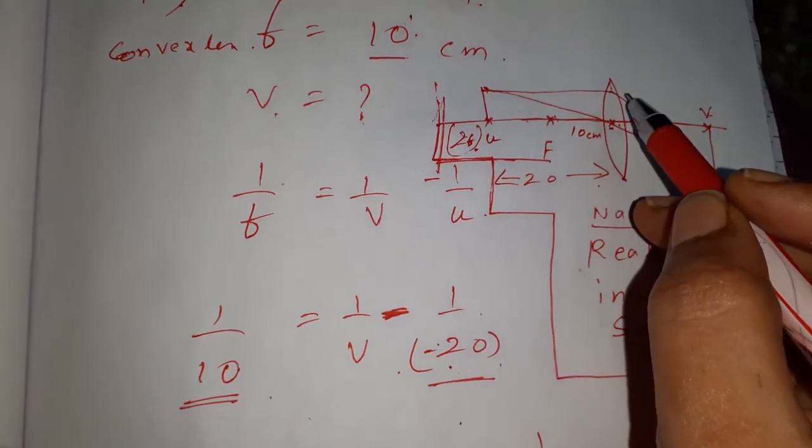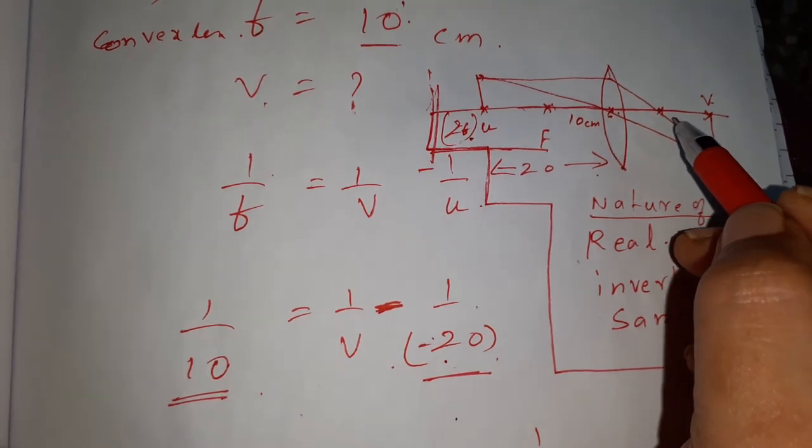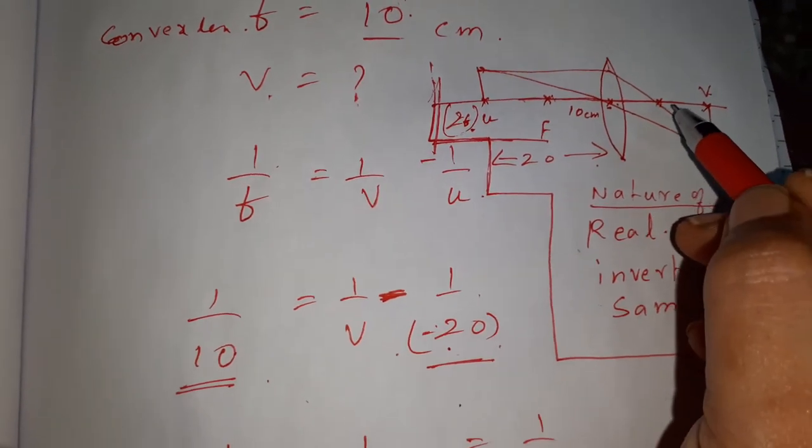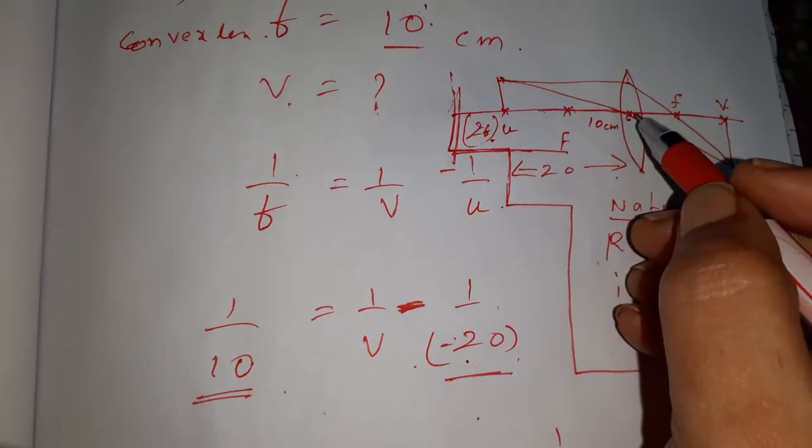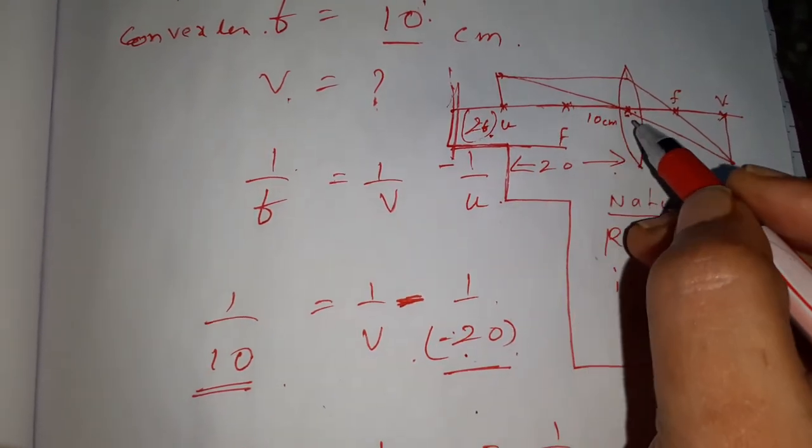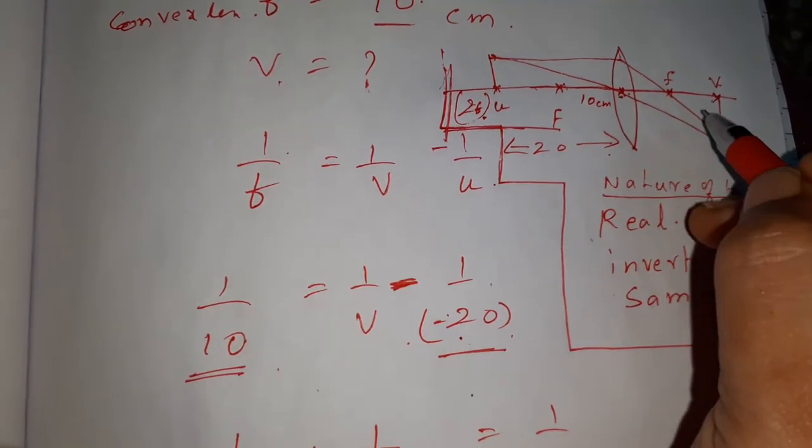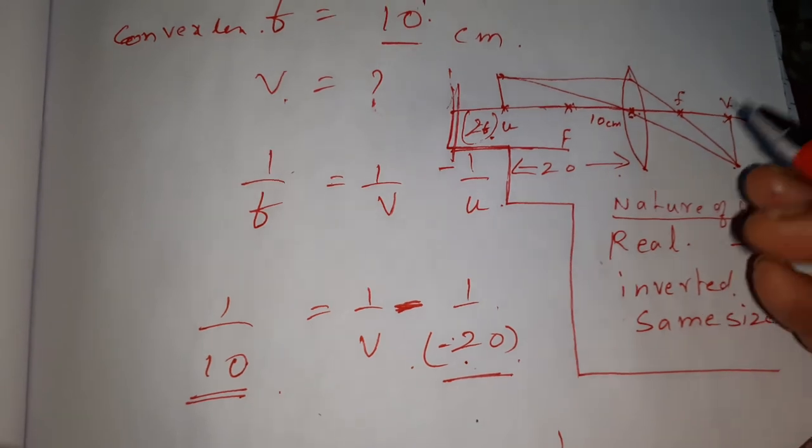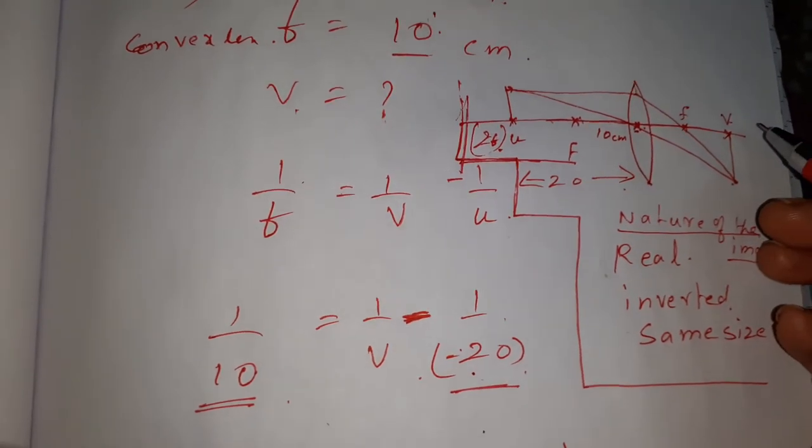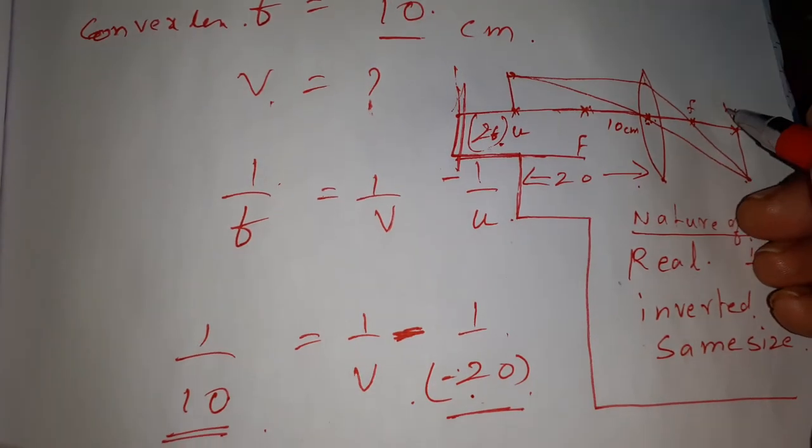The parallel ray, after reflection, will pass through, converges through the F, focal point. Then the ray which is passing through the optic center won't get deviated. Both will meet at next side to F where the image will be formed, that is your V.